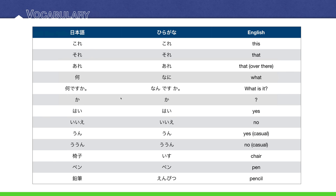Next, we have the question particle か. You place this at the end of a sentence to make it a question, and it acts like a question mark in English, which is why its English translation is 'question mark.' Next, we have yes and no in Japanese, which is はい and いいえ.